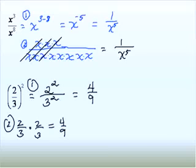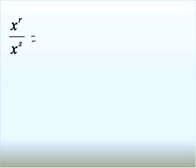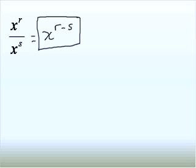Last but not least, one more quotient of powers — this time with all variables. Having all variables doesn't change what we do: combine to a single base and subtract the exponents. We can't simplify further since they're just variables and not like terms, so this is the final answer. That ends this session on foundations for rational expressions.